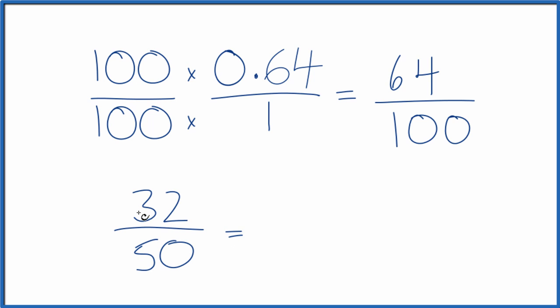We can reduce it even a little more though. 32 divided by 2 is 16. 50 divided by 2 is 25.